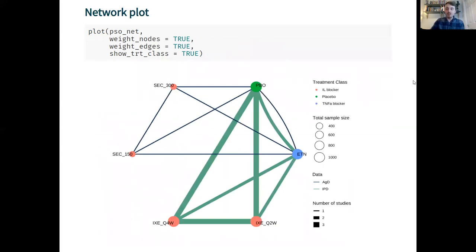I can also plot the network using the plot methods. Here I'm weighting the nodes by the total sample size and the edges by the number of studies on each comparison and I'm also showing the treatment classes by coloring the nodes as well.